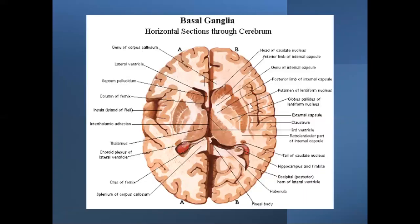In the cross-sectional anatomy you can see the lateral ventricle and the third ventricle. This is the head of the caudate nucleus, and this is the internal capsule with its anterior limb, genu, and posterior limb. This is the caudate nucleus and this is the thalamus. Here you can also appreciate the tail of the caudate nucleus.